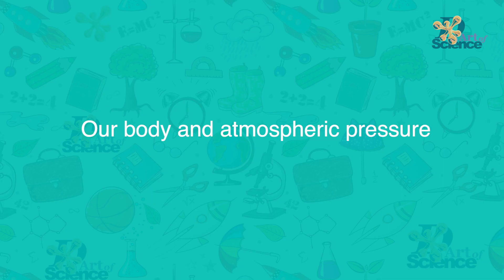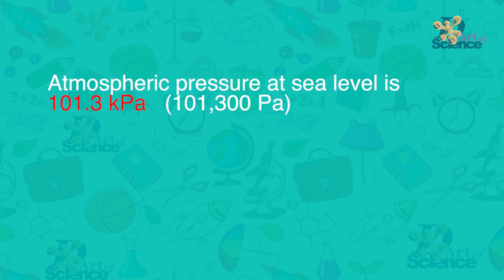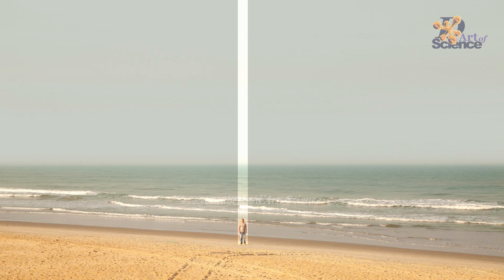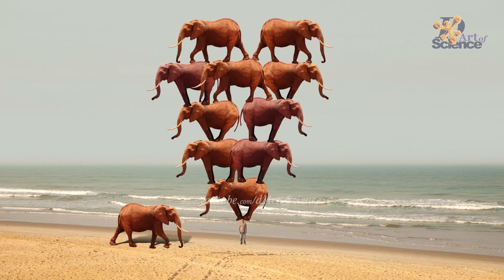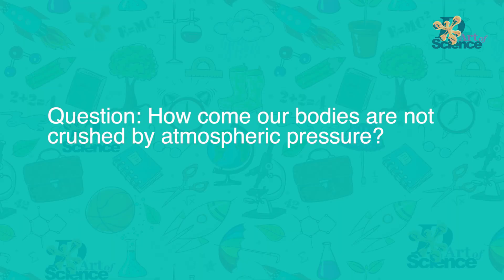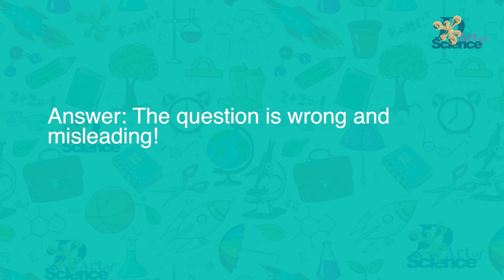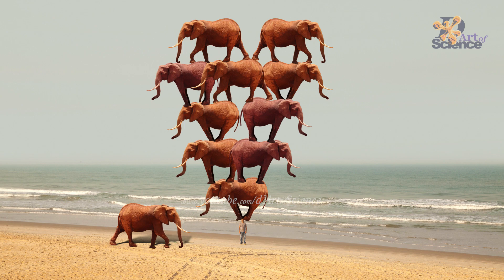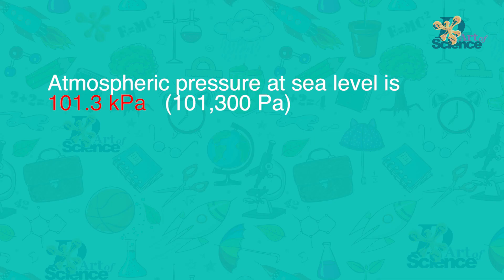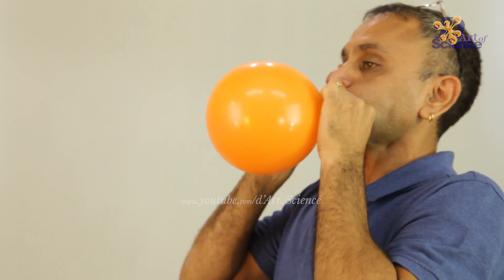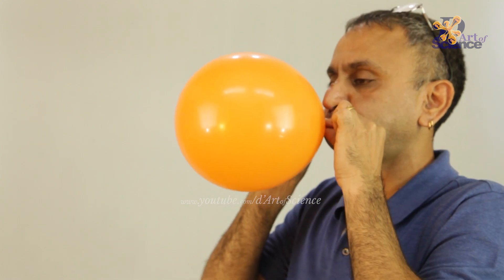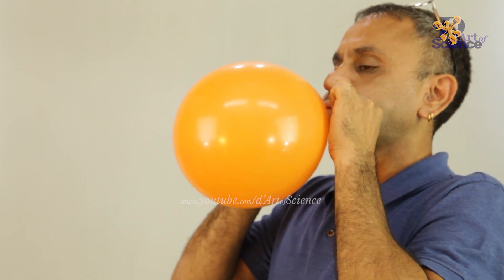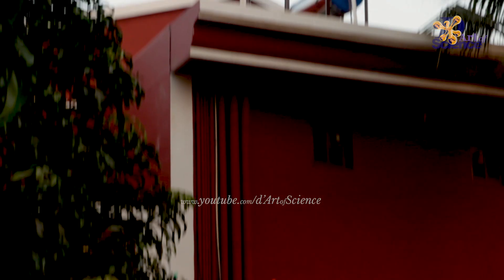Our body and atmospheric pressure. Many books ask: if atmospheric pressure is equivalent to 10 elephants standing on one square meter, how come our bodies don't get crushed? The answer is that the question is misleading. The volume of air above one square meter at sea level may have a weight equal to 10 elephants or 101,300 pascals, but one has to remember that air applies pressure in all directions — so there is no pressure of that magnitude acting only downwards on our bodies.